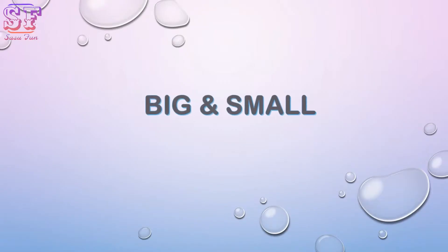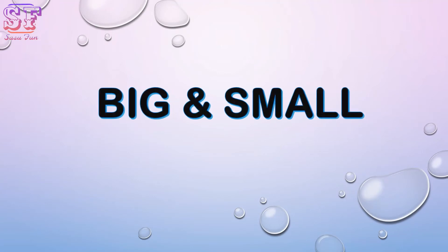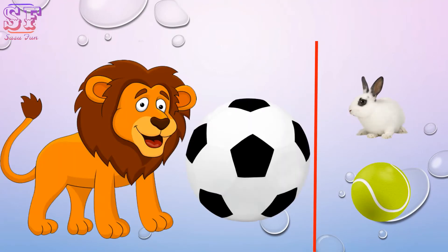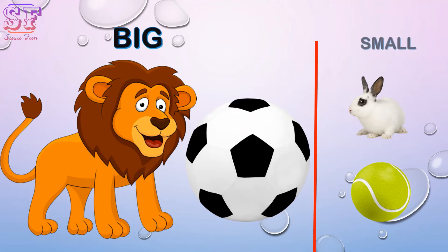Our first concept is big and small. We have two objects. Lion and football are big. Rabbit and tennis ball are small in size.